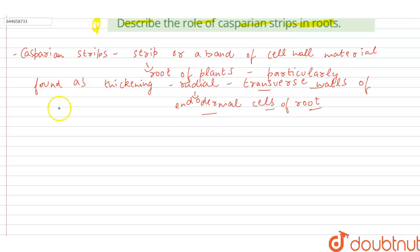So the major component of Casparian strips is suberin. Suberin is a lipophilic bi-polymer.